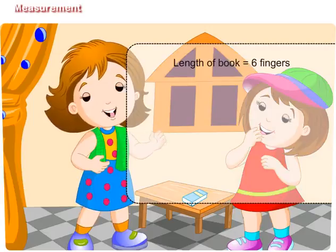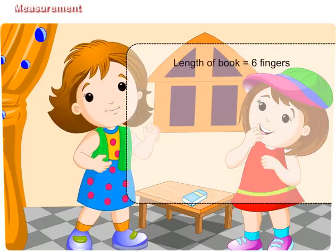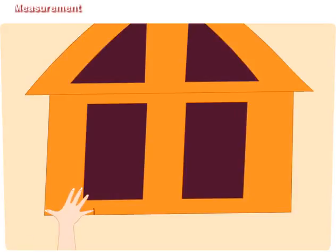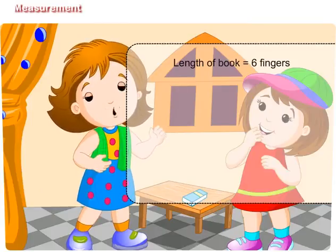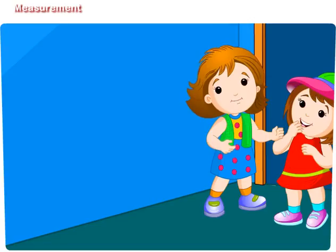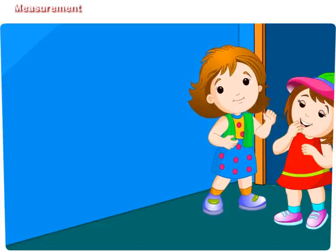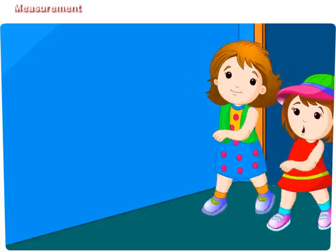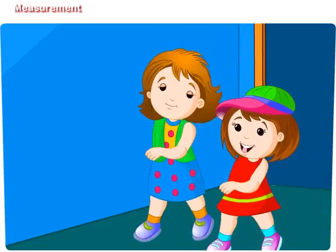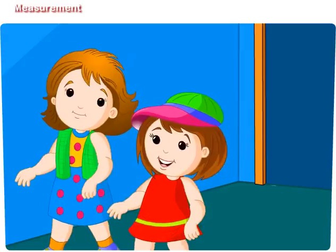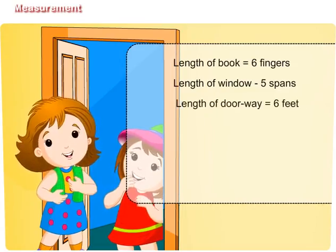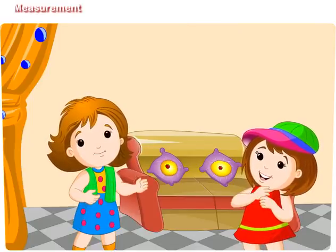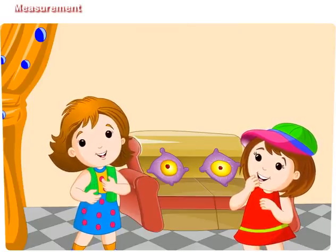We can measure the length of this window using our handspan: 1, 2, 3, 4, 5. We can measure the doorway of our house using our feet: 1, 2, 3, 4, 5, 6. So, the doorway of our house is six feet long.